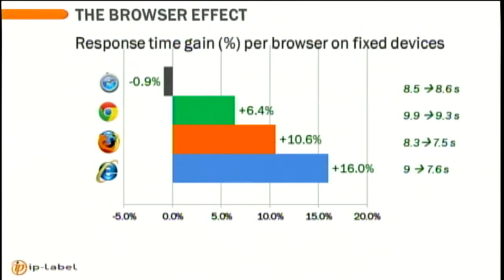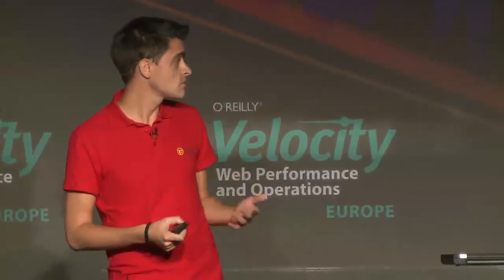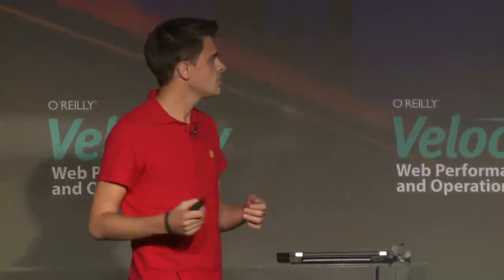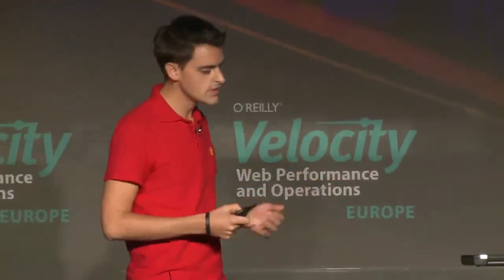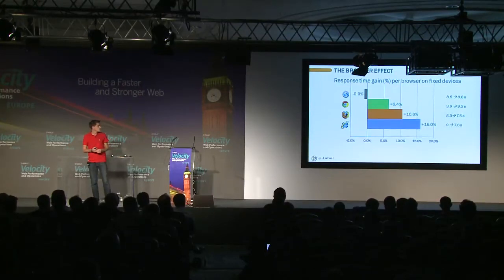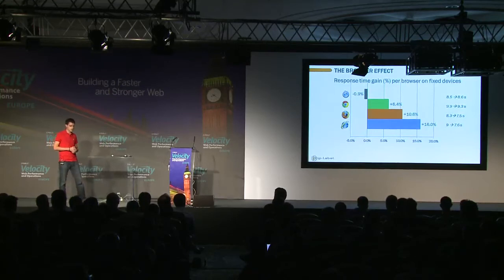Another effect that can also vary a lot is the browser. Comparing the performance benefits across the main browsers, we saw that Internet Explorer did benefit the most. Initially it was not the quickest — that was Firefox — but following the optimization, on average all Internet Explorer users were a bit quicker, still not as fast as Firefox, but they benefited most. On the contrary, Safari browsers on average did not have any major impact.